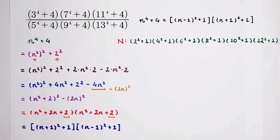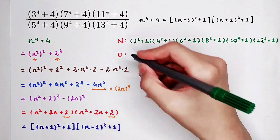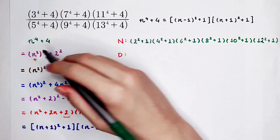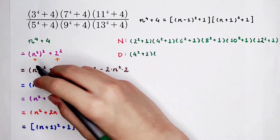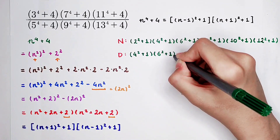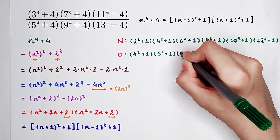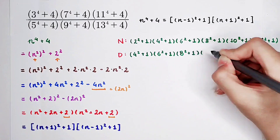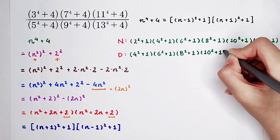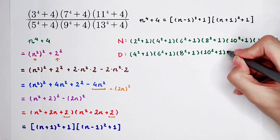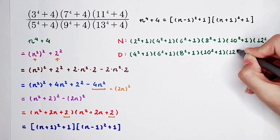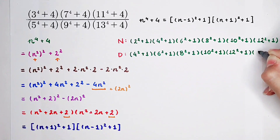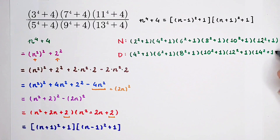Let's deal with the denominator. We should divide the numerator by the denominator. For n equal to 5: 5 minus 1 is 4, so 4 squared plus 1, times 5 plus 1 is 6, so 6 squared plus 1. For n equal to 9: 9 minus 1 is 8, so 8 squared plus 1, times 9 plus 1 is 10, so 10 squared plus 1. For n equal to 13: 13 minus 1 is 12, so 12 squared plus 1, times 13 plus 1 is 14, so 14 squared plus 1.